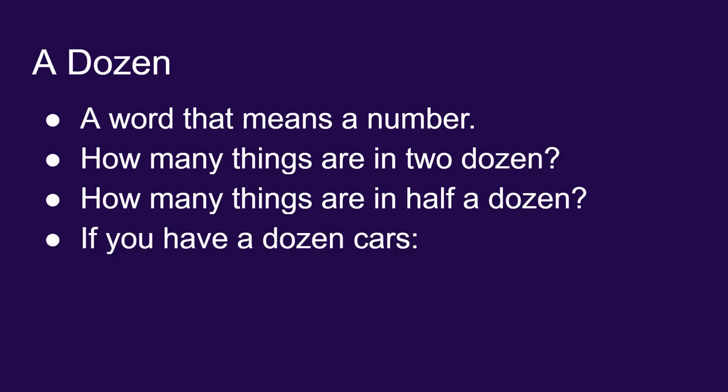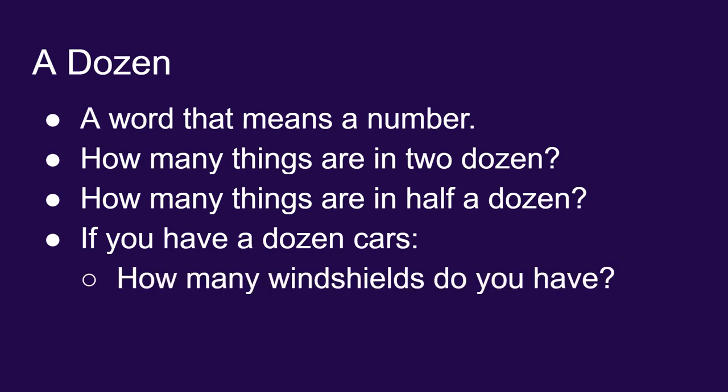If you have a dozen of something, you know how many parts there are of that thing. If you have a dozen cars, you know each car has a windshield, so you also have a dozen windshields. If you have a dozen cars, each car has four tires, so that means you have 48 tires.